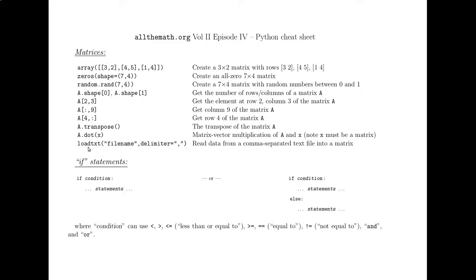We learned the loadtxt function last time that allows us to read data from a file. Here we're going to specify the delimiter, which is what separates the items in a particular row from each other. A lot of times we're dealing with data that is comma separated — each row of the file is a row of the matrix, and the individual elements in each column are separated by commas. So that's the first big thing to learn in this segment: matrix operations.